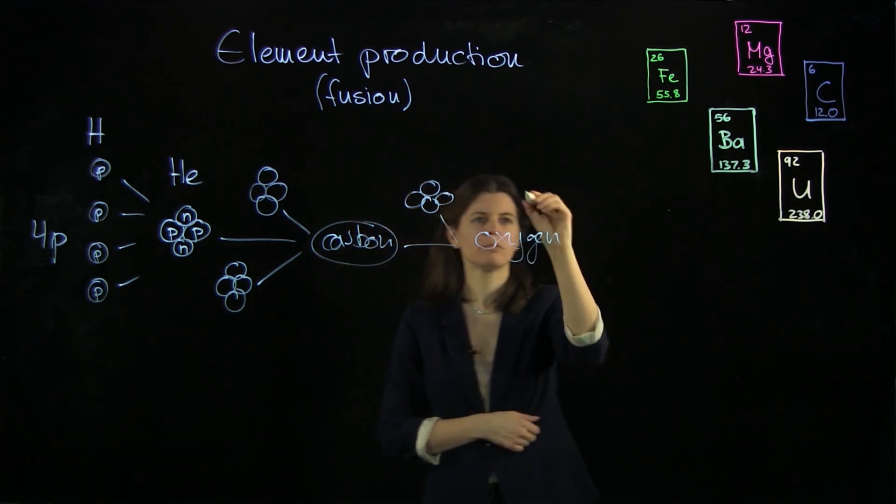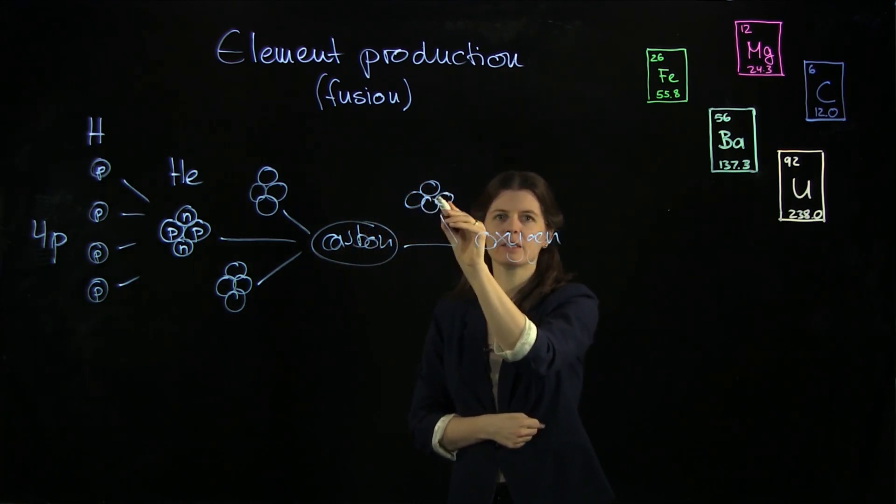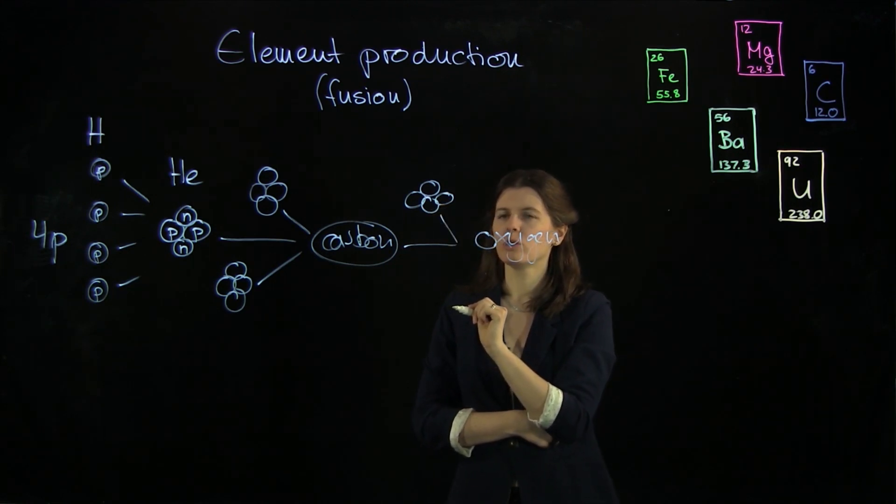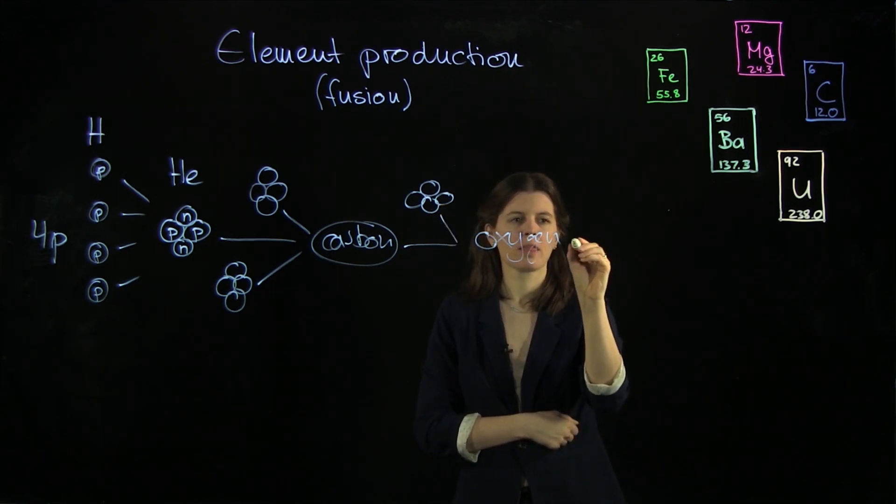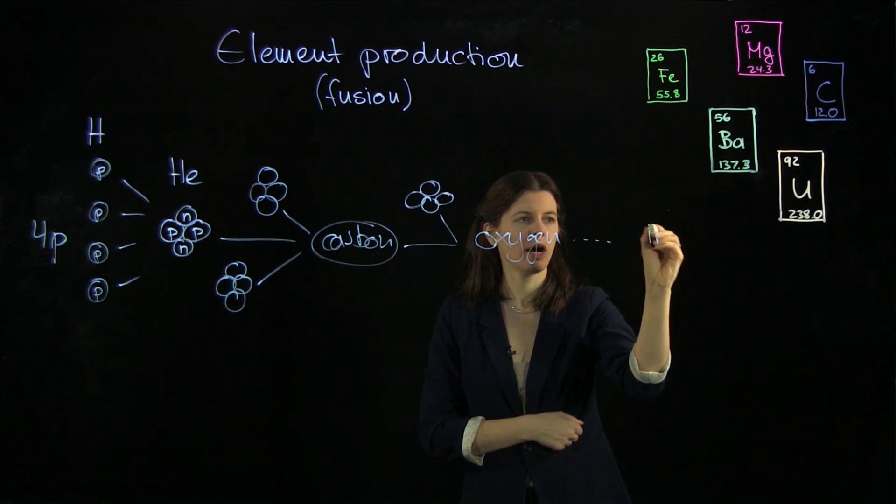And if we add more so-called alpha particles, helium nuclei often called alpha particles, then eventually we're going to get to iron.